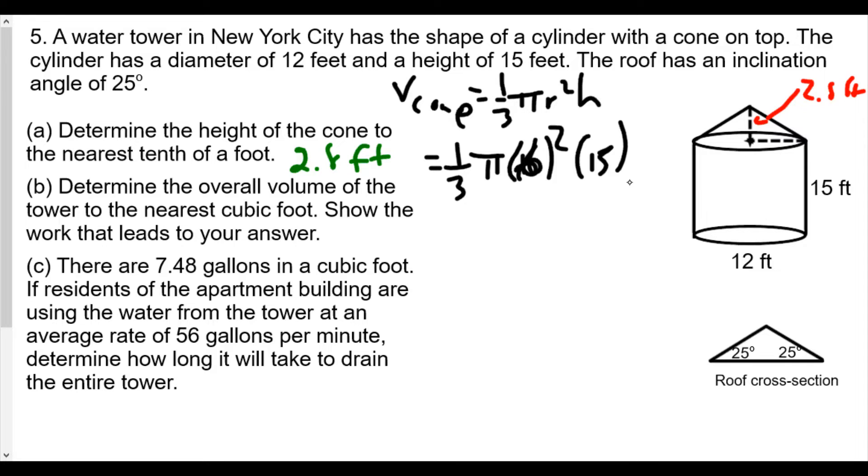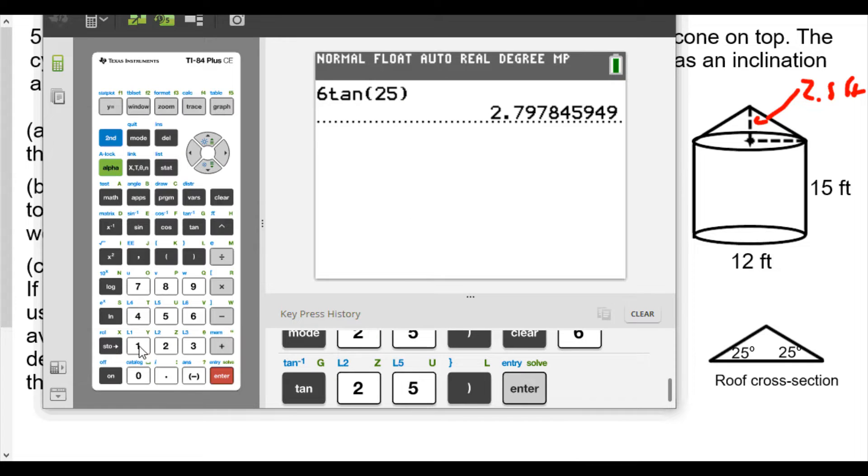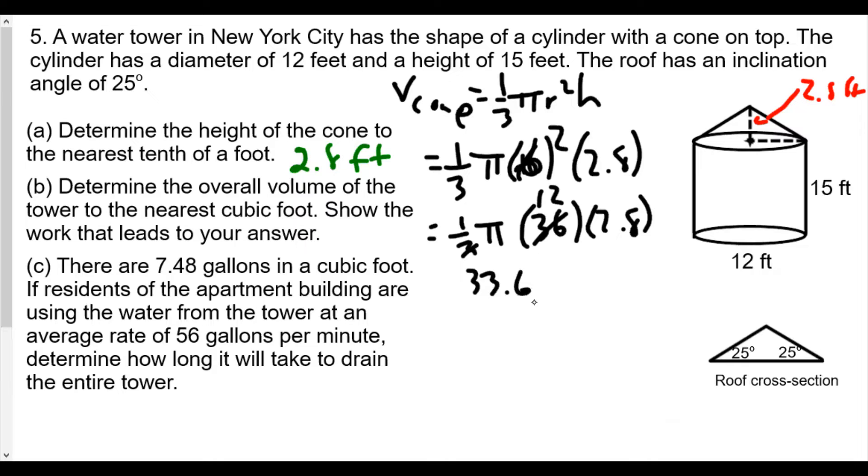The nice thing in this case is that—oh sorry, I was looking at the information for the cylinder, not for the cone. The cone is 2.8. So we have one-third π times 36 times 2.8. The 3 goes into 36 twelve times, so 12 times 2.8—I'll break out the calculator for that one. 12 times 2.8 equals 33.6.